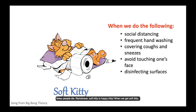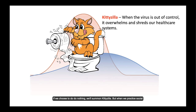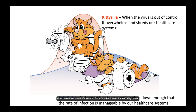When we get soft kitty, we're flattening — or cattening — the curve. So here are those two curves again. The takeaway: if we choose to do nothing, we'll summon Kittyzilla. But when we practice social distancing, hand washing, and all those other great preventative measures to keep from getting sick, we'll slow down the spread of the virus. So let's strive toward the soft kitty curve and everything will be okay.